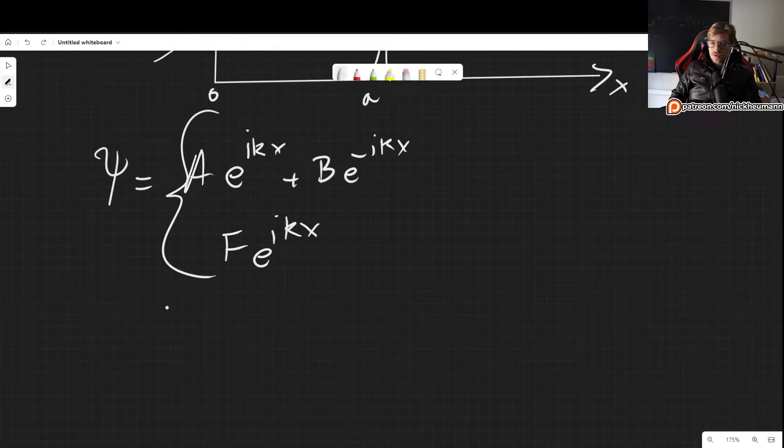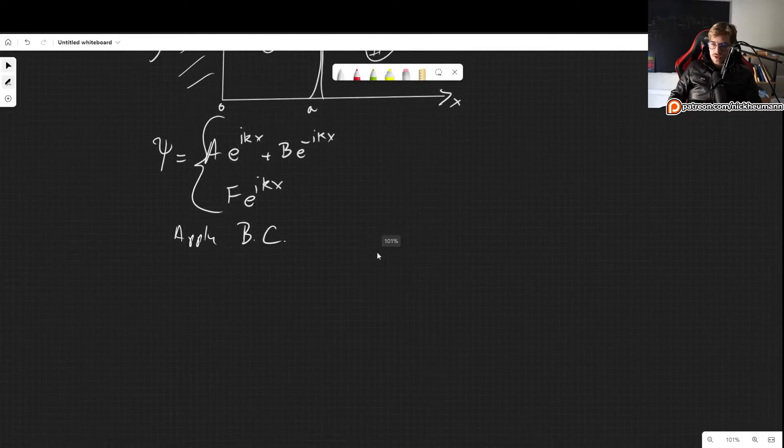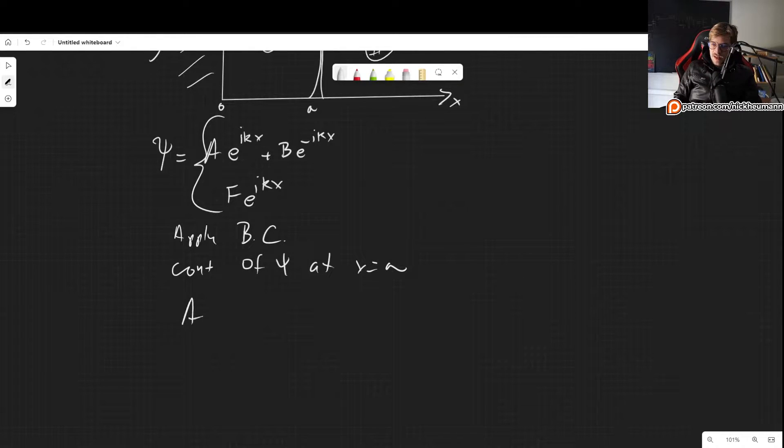Now, step number two, as usual, is to apply boundary conditions. Now, this time, there is an additional boundary condition. Because as before, we have the continuity of psi at x equals a, which gives us that A e to the i k a plus B e to the minus i k a has to be equal to F e to the i k a.